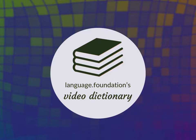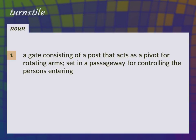Language.Foundation's Video Dictionary, helping you achieve understanding. A gate consisting of a post that acts as a pivot for rotating arms, set in a passageway for controlling the persons entering.